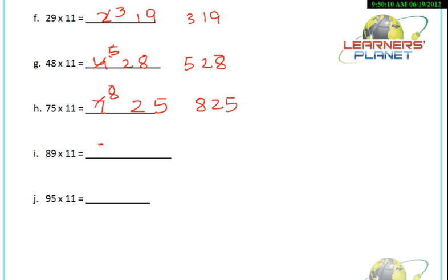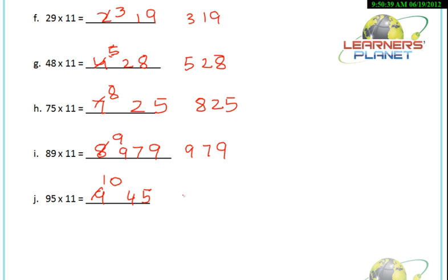Similarly, 89 into 11: write 8 here, 9 here. 8 plus 9 gives 17 — write 7 here and 1 is carried. 8 plus 1 is 9. So the answer is 979. Similarly, 95 into 11: split the number, 9 and 5. 9 plus 5 is 14 — write 4 here and 1 is carried away. 9 plus 1 is 10, so it's 1, 0, 4, 5. It's actually very simple, friends.